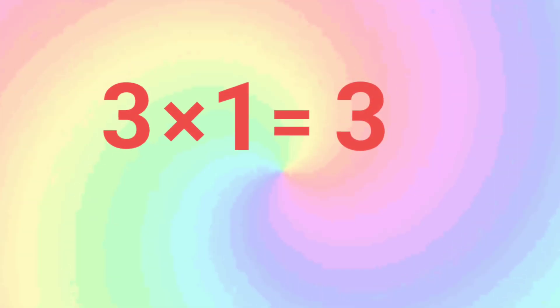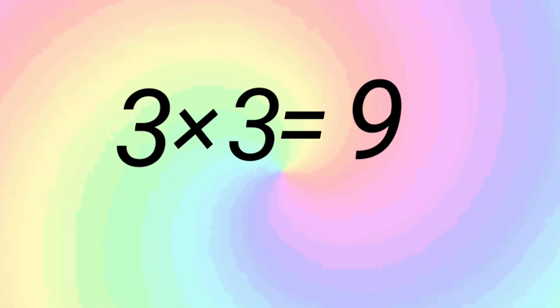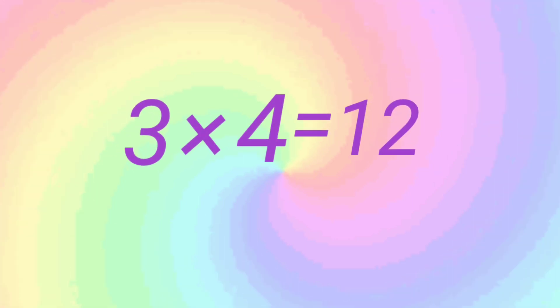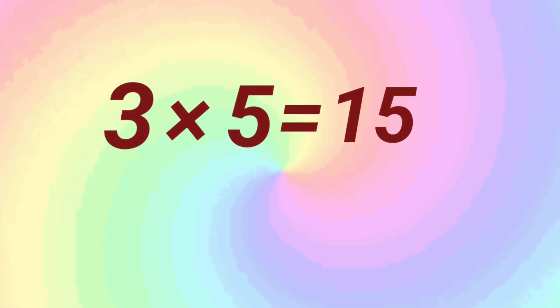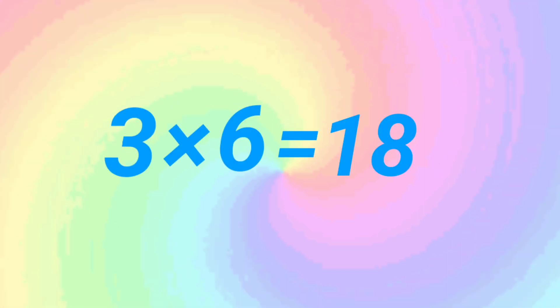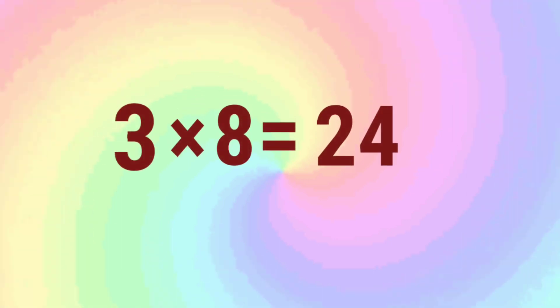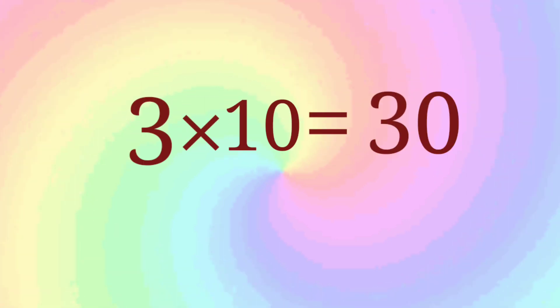3 on the 3. 3, 2: 6. 3, 3: 9. 3, 4: 12. 3, 5: 15. 3, 6: 18. 3, 7: 21. 3, 8: 24. 3, 9: 27. 3, 10: 13.